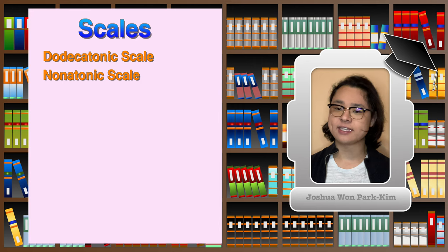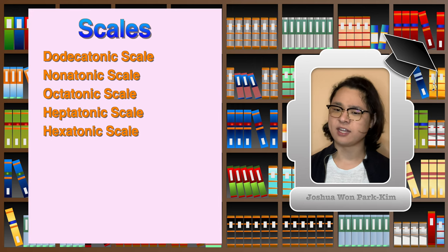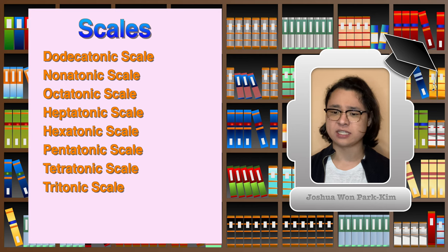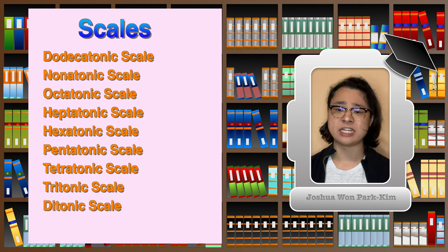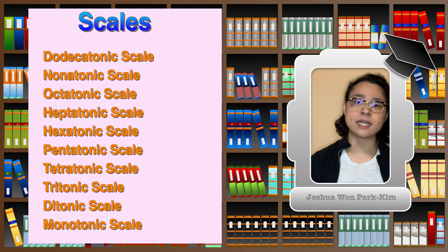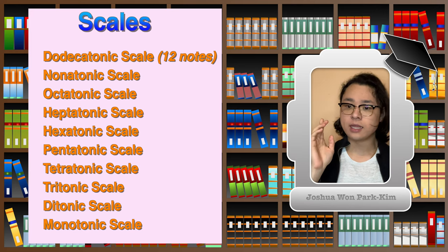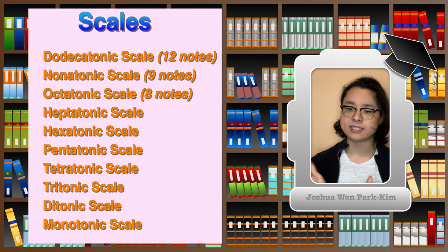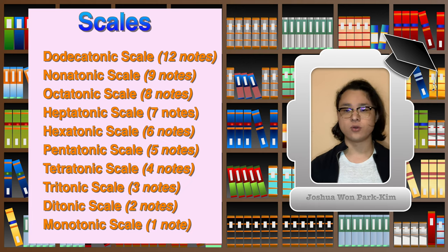I'm going to start off with the most simplest names as possible: dodecatonic scale, nonatonic scale, octatonic scale, heptatonic scale, hexatonic scale, pentatonic scale, tetratonic scale, tritonic scale, diatonic scale, and monotonic scale. Dodecatonic is a scale consisting of 12 notes. Nonatonic contains 9 notes. Octatonic has 8 notes, and then you get the rest.